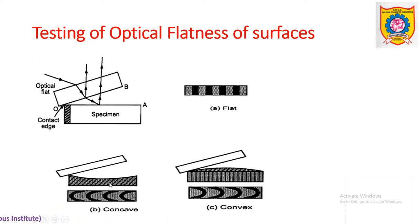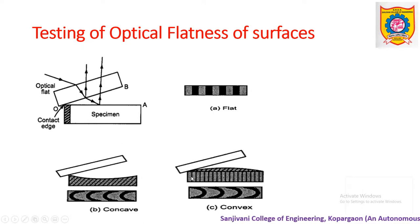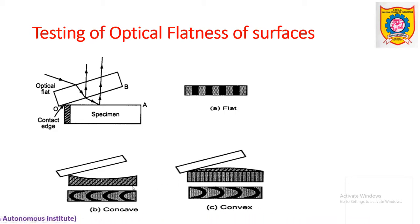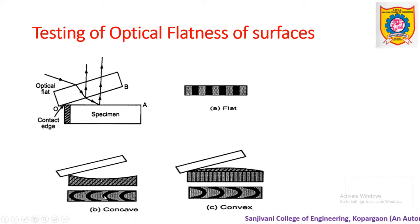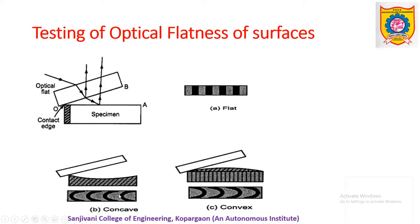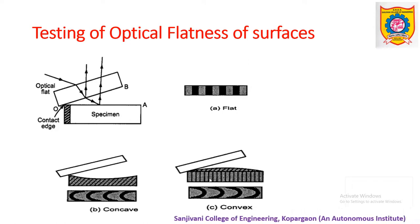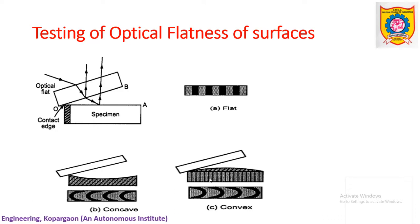Now, in case the surfaces are not optically flat — say concave as in the second diagram, or slightly convex as in the third diagram — the surfaces are not optically flat. How do we decide? That will be observed in the field of view. If the bands are not straight — they will be alternately bright and dark but will not be straight — that means the surfaces are not optically flat. This way, using the simple interferometry concept, we can conclude whether the given surface is optically flat or not.